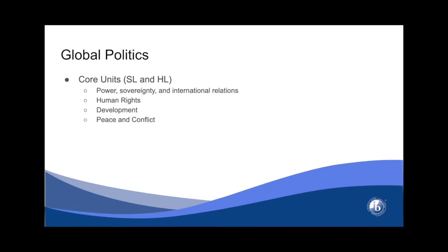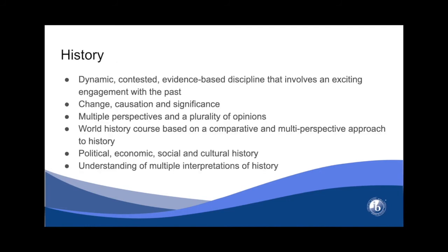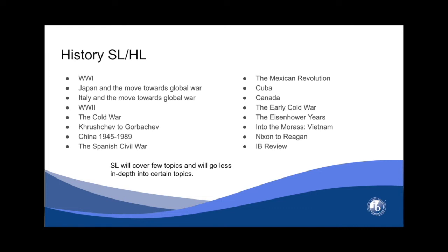These are the core units in the global politics course for SL and HL, and then HL students will choose two additional topics. These courses are taught combined, so even though SL isn't responsible for the HL topics in terms of IB, they will be learning them anyway. The history course looks at world history primarily in a very small time span, from multiple perspectives and disciplines — politics, economics, social history, and cultural history. It's not looking at a single interpretation, but rather multiple interpretations of historical events, specifically how they impacted countries and systems around the world. SL will cover fewer topics and go less in depth, while HL also has a component called history of the Americas.